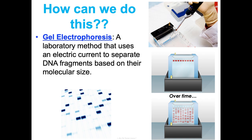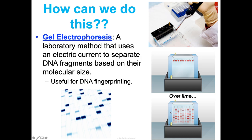Gel electrophoresis is a lab method that uses an electric current to separate DNA fragments based on their molecular size. It's really useful for DNA fingerprinting, or identifying organisms by their DNA. Because of the phosphate groups in them, DNA fragments have a slightly negative charge, so when the current is turned on, they're attracted to the positive end of the gel. Smaller fragments move faster and farther than larger ones, creating banding patterns that we can compare across samples.